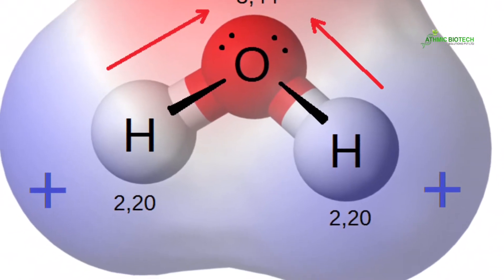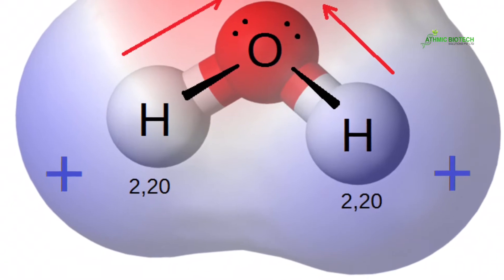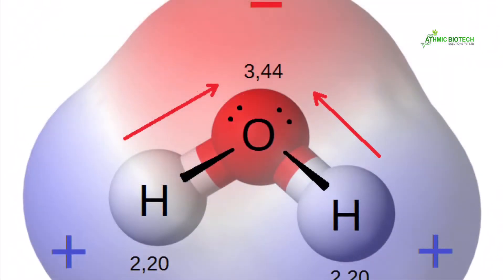The water molecule is a perfect example of a polar compound because one side is positively charged and the other side is negatively charged.